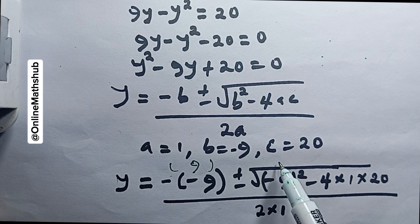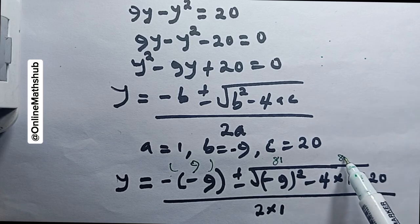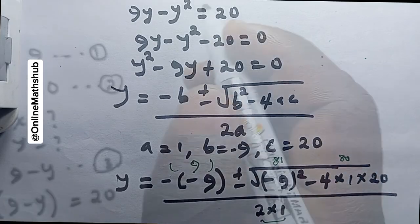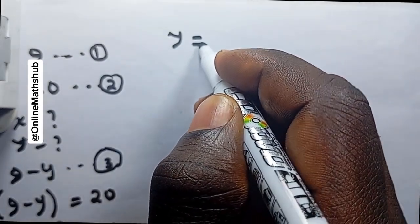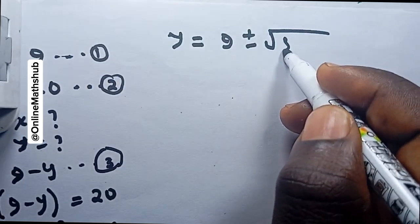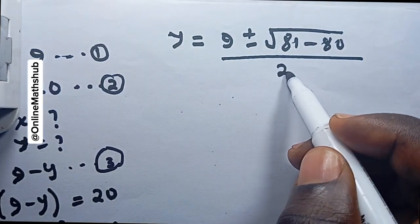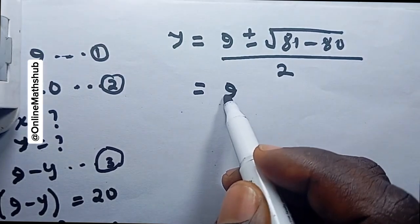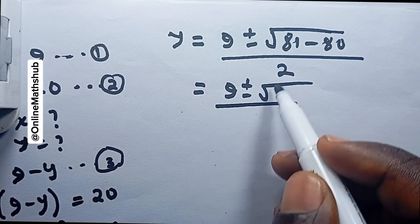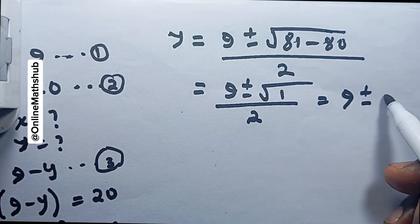Evaluating: negative 9 squared equals 81, and 4 times 1 times 20 equals 80, so we have 9 plus or minus the square root of 81 minus 80, divided by 2. That simplifies to 9 plus or minus the square root of 1, divided by 2, and the square root of 1 is just 1.